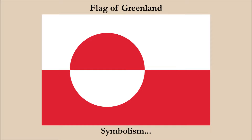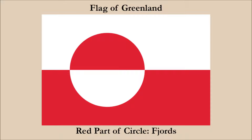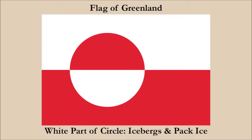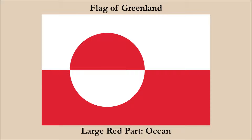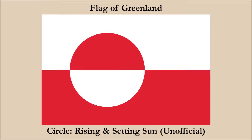He described the symbolism as the following: the large white part in the flag symbolizes the ice cap, and our fjords are represented by the red part in the circle. The white part of the circle symbolizes the icebergs and the pack ice, and the large red part in the flag represents the ocean. Some people interpret the circle as being a symbol of a rising and setting sun, but as far as we know, Christensen never mentioned this himself.